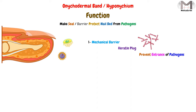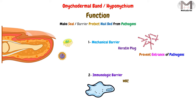The second feature is the immunologic barrier, represented by the white blood cells which exist in this block. These cells help in prevention of infection.